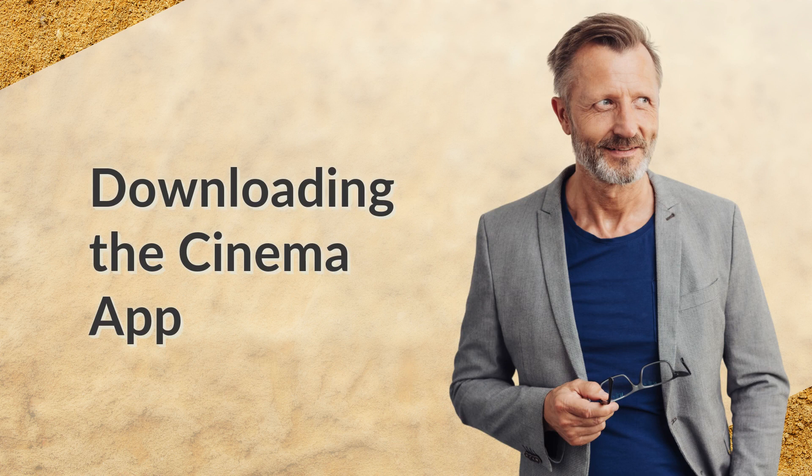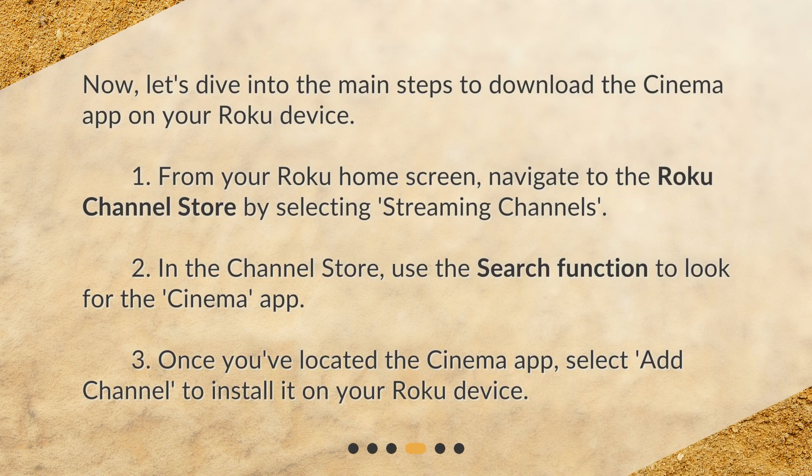Downloading the Cinema App. Now, let's dive into the main steps to download the Cinema App on your Roku device. 1. From your Roku home screen, navigate to the Roku Channel Store by selecting Streaming Channels. 2. In the Channel Store, use the search function to look for the Cinema App. 3. Once you've located the Cinema App, select Add Channel to install it on your Roku device.